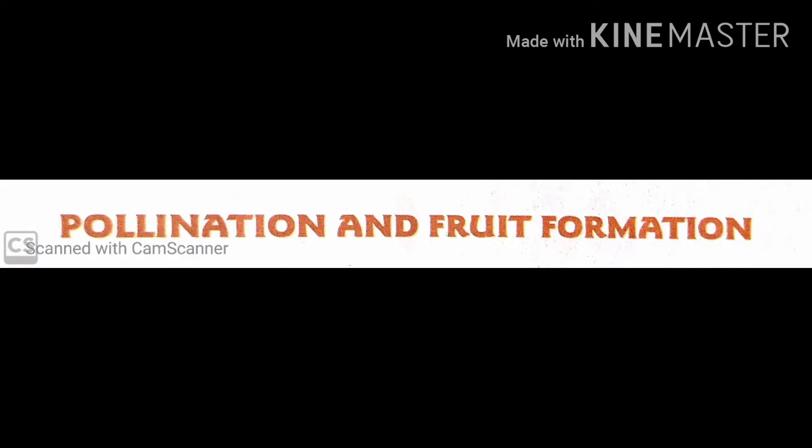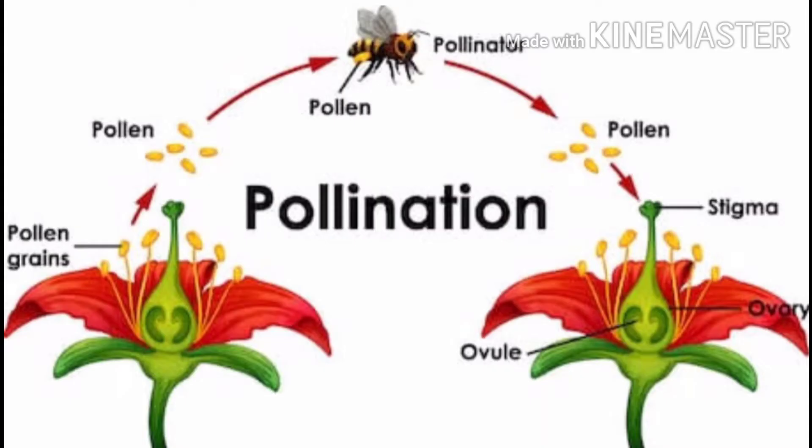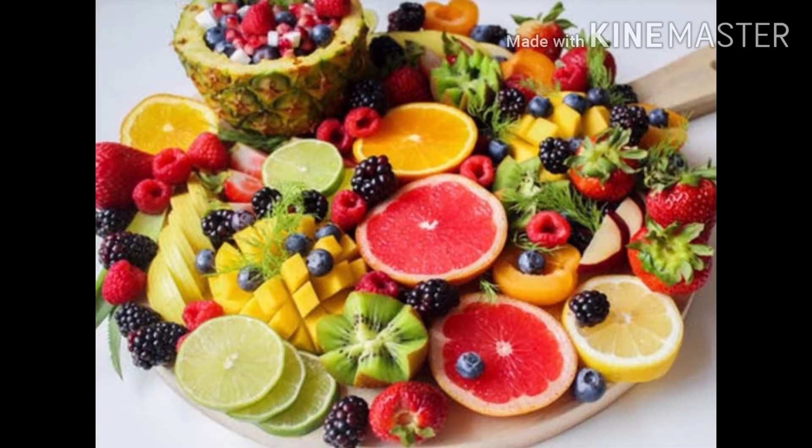Students, we learned about the parts of a flower. Hope everything is clear to you. Next, we will learn about pollination and fruit formation. Pollination is a process through which pollen grains from the anthers are transferred to the ovary of a flower. These pollen grains reach the ovary through the stigma of the flower.